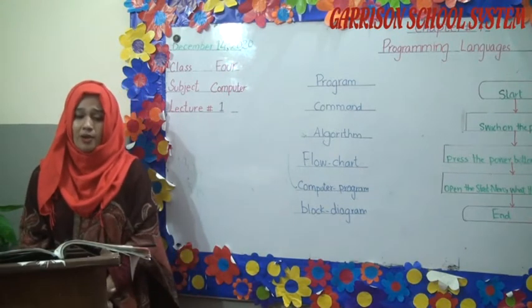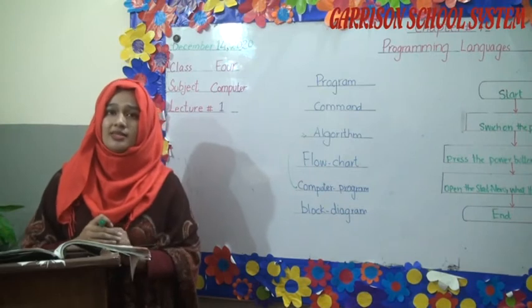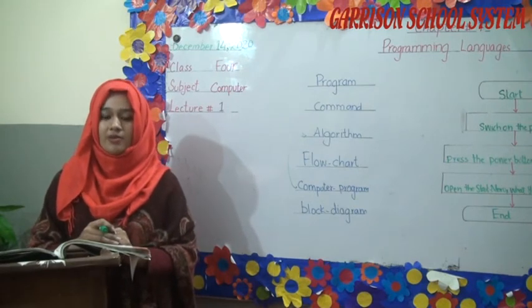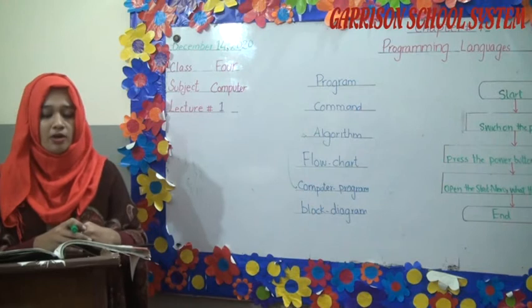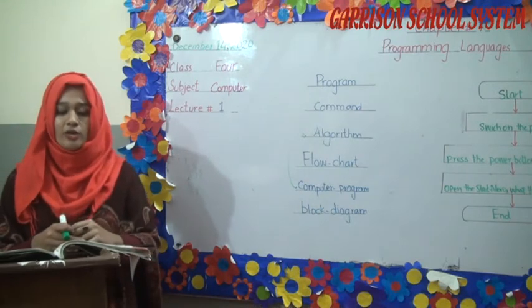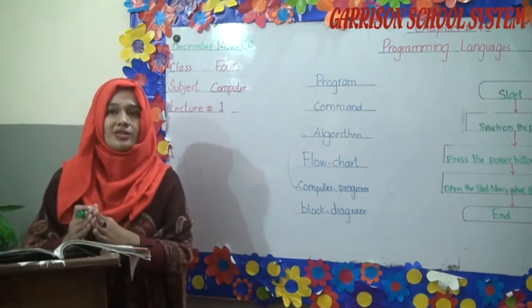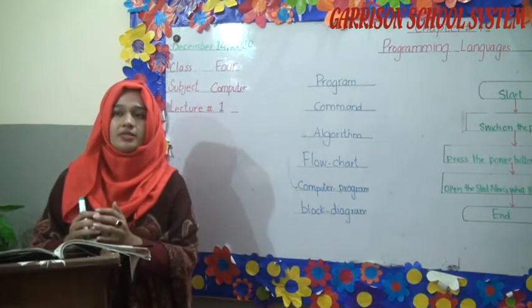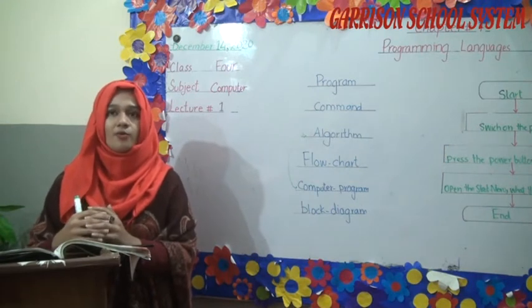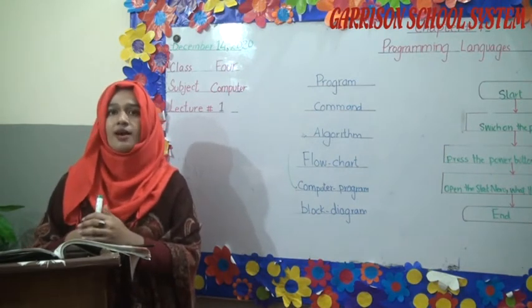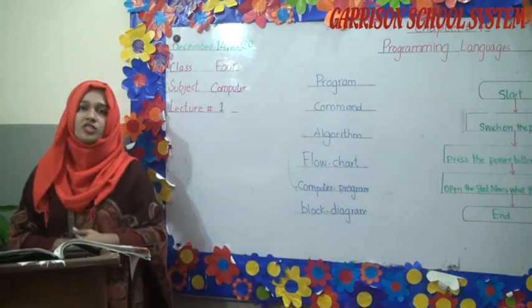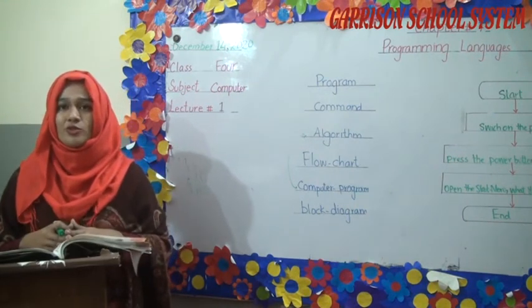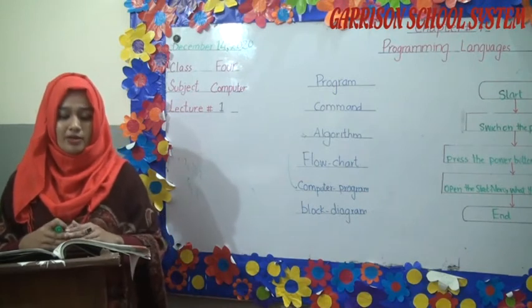Can you give an example of an algorithm for a computer program? You state what the algorithm is for and then list the steps. Examples of computer programs include: a program for opening a file, displaying content, scoring during a game, saving a file, printing a file, or searching on the internet. You can also search online for more programming examples.